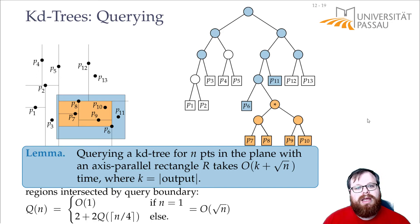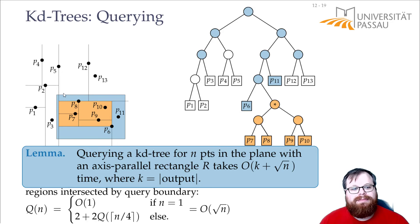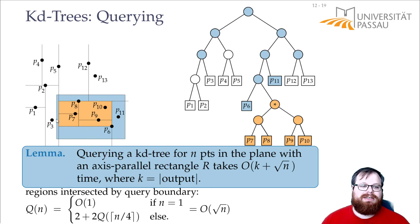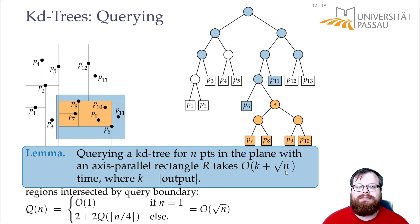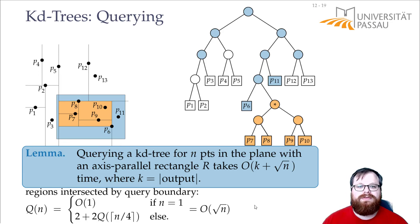This is actually a very high overestimation since we count some regions multiple times, but it's the best bound we can establish — we cannot do better than O(√n). So this works for us.